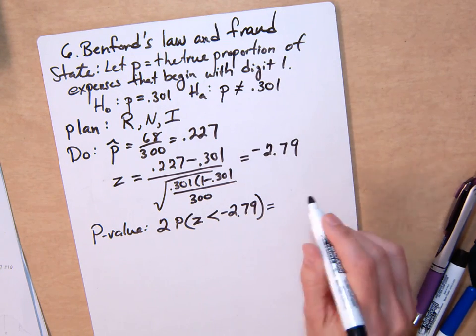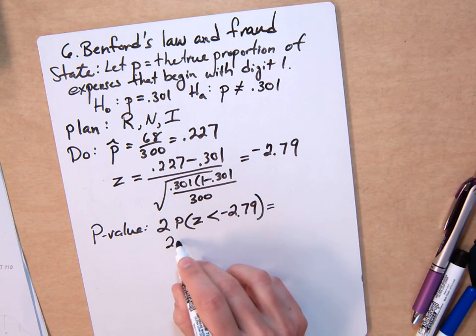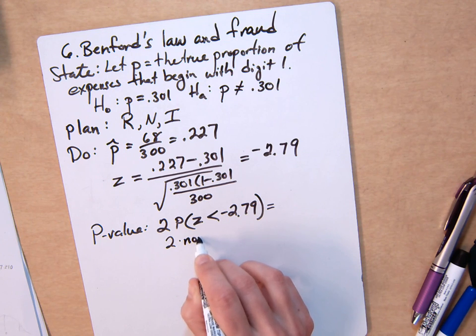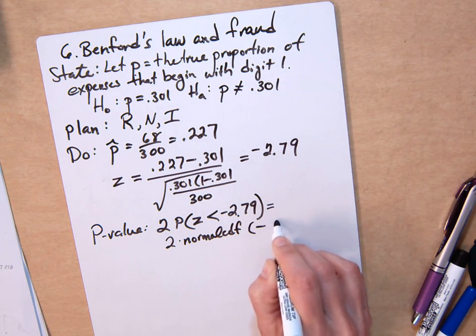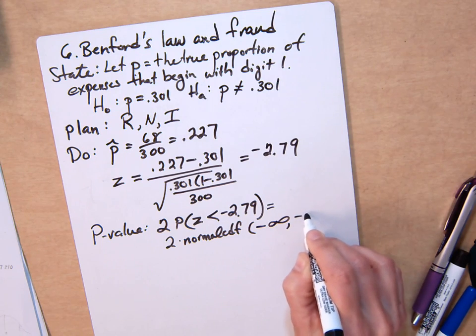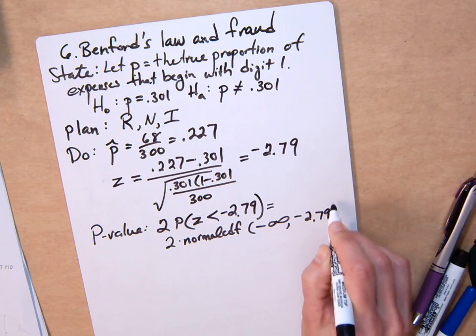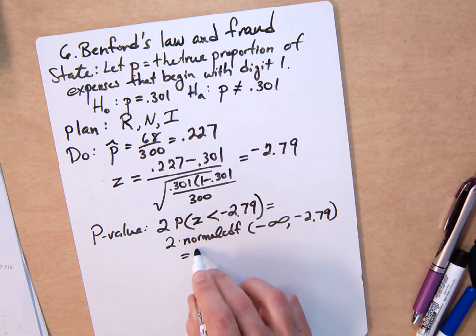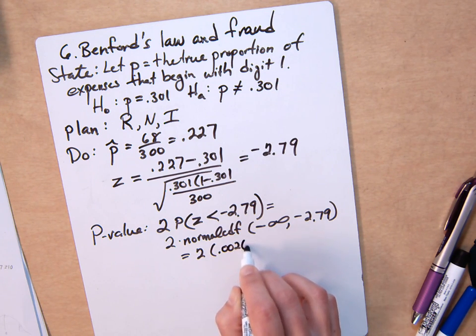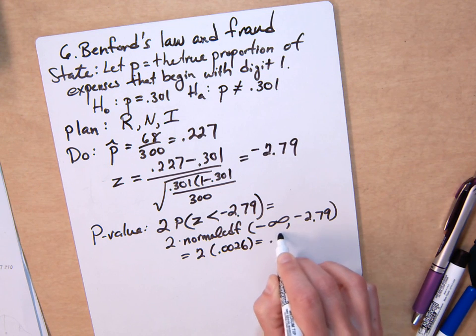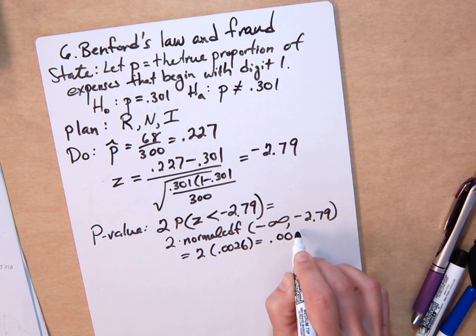On your calculator, you would do 2 times normalcdf, negative infinity to negative 2.79, and that'll give you—you can check—2 times 0.0026, or 0.0052.